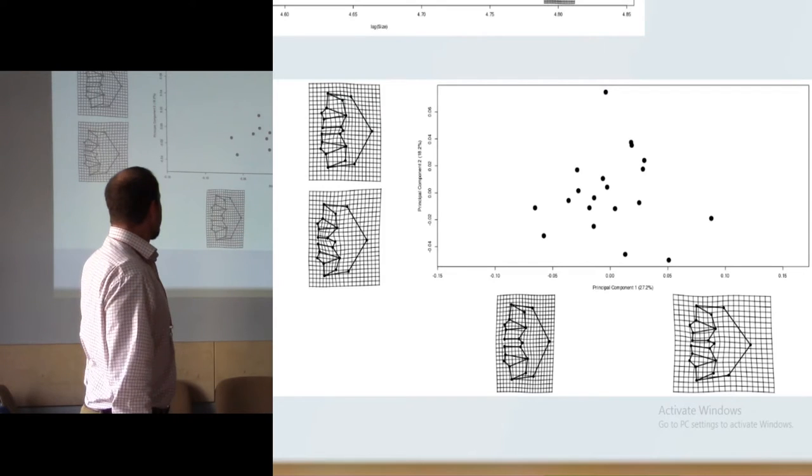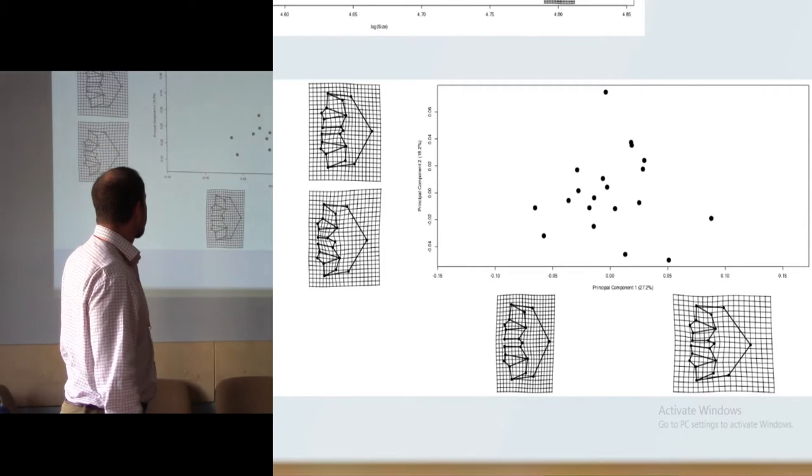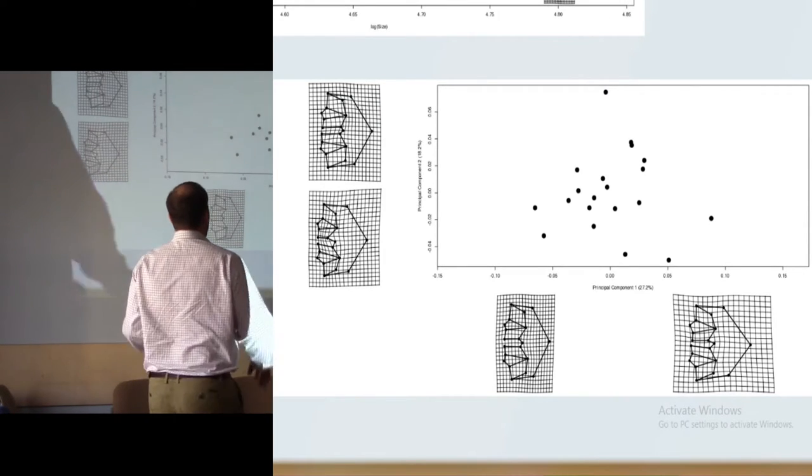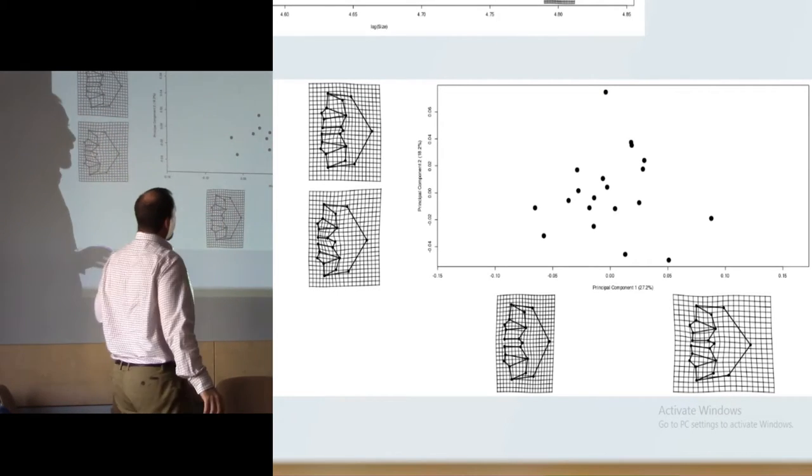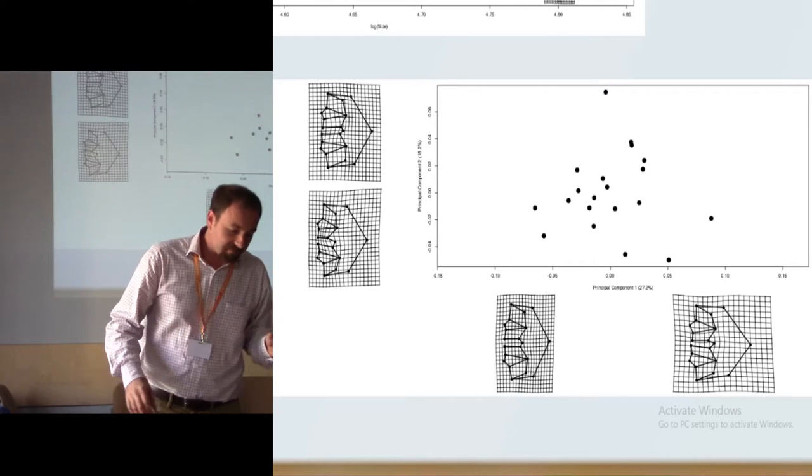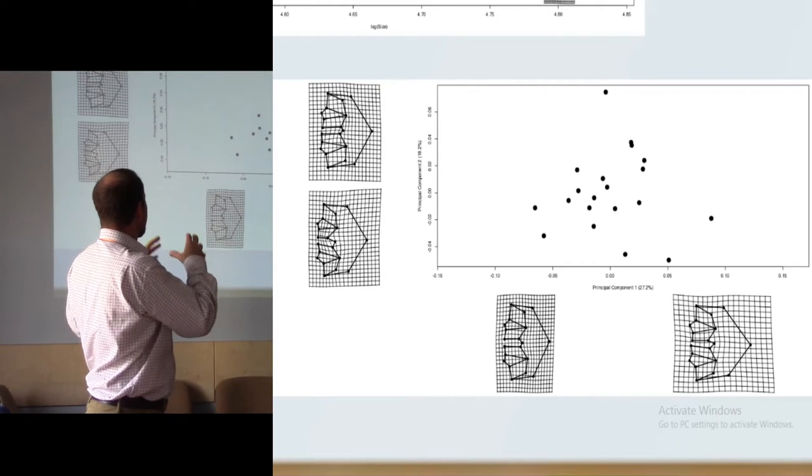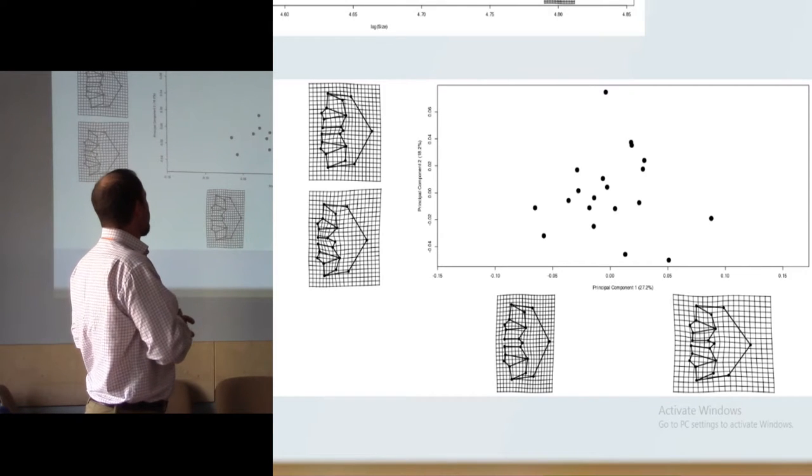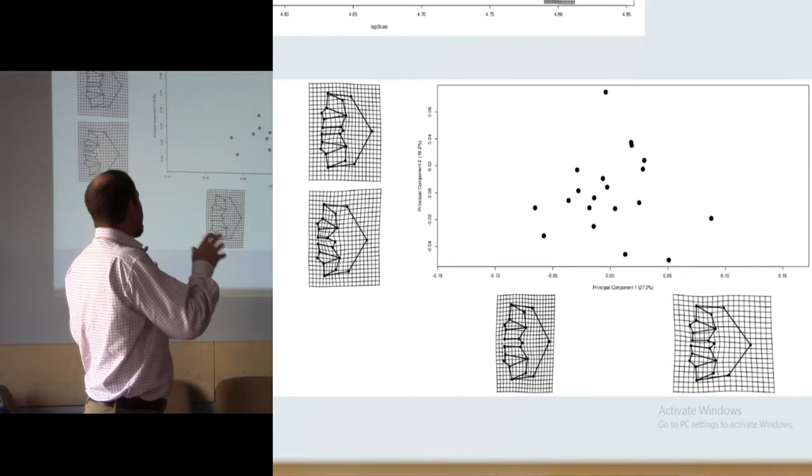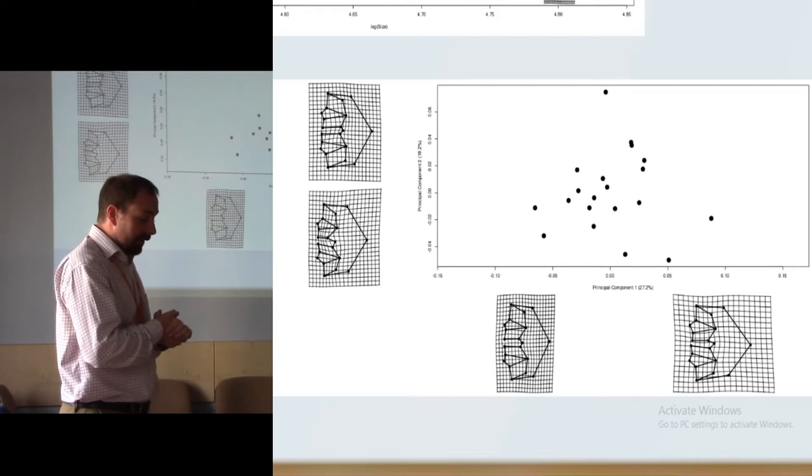And finally, the result of the PCA, the principal component analysis. Near the axes, you can see the extremes of the shapes. In this picture, this shows that it's a more or less homogeneous group of individuals, but maybe it's dividable by subgroups.